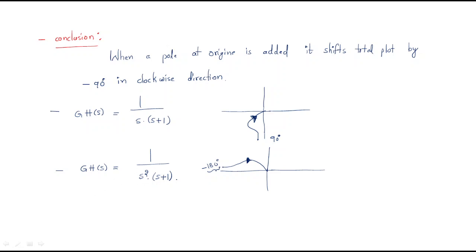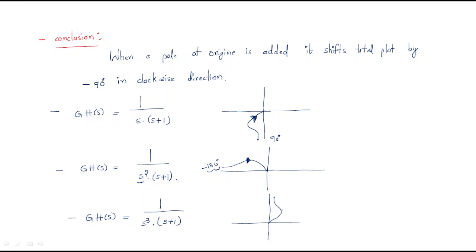If yet another pole at the origin is added, giving 1/(s³(s+1)), the starting direction becomes minus 270 degrees and the ending direction becomes minus 360 degrees (or 0 degrees). The plot flows like this.